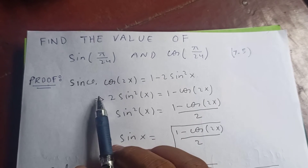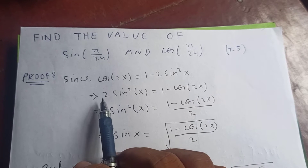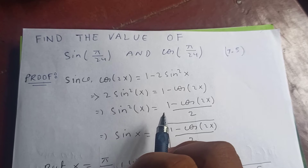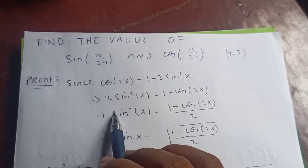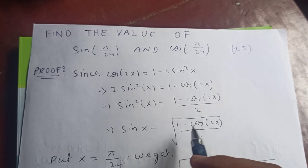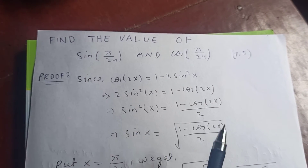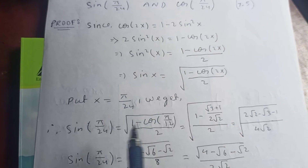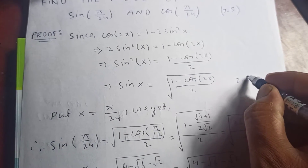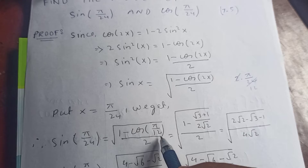Let's start with sine. Since cos 2x is 1 minus 2 sine squared x, we get 2 sine squared x equals 1 minus cos 2x, so sine squared x equals (1 minus cos 2x) over 2. Dividing both sides by 2 and taking the square root, sine x equals square root of (1 minus cos 2x) over 2. Now putting x equal to π over 24, we get square root of (1 minus cos(2 × π/24)), which is cos(π/12).